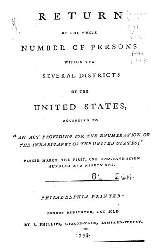Census data included the name of the head of the family and categorized inhabitants as follows: free white males at least 16 years of age, to assess the country's industrial and military potential; free white males under 16 years of age; free white females; all other free persons reported by sex and color; and slaves.